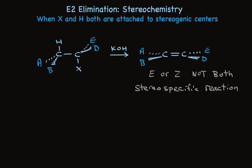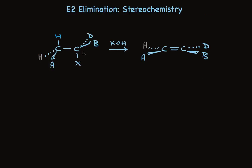But there are examples of the E2 reaction that are not stereospecific. Take a look at this. This reactant has one stereogenic center, the one that has the halide attached to it. The other center has two hydrogens. It's not a stereogenic center.